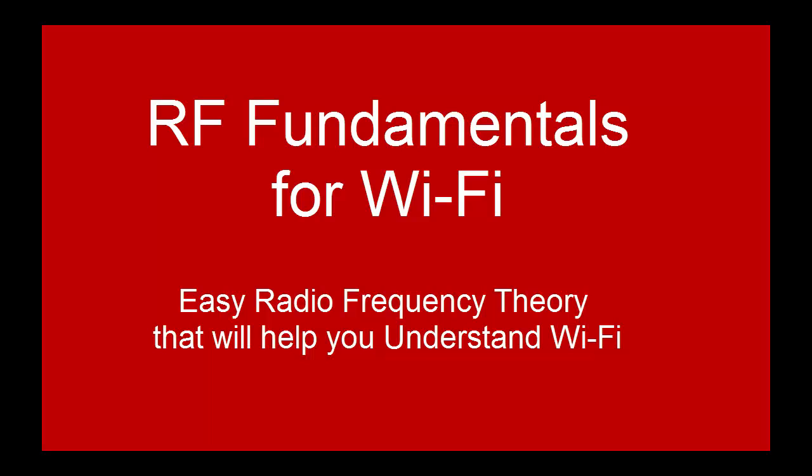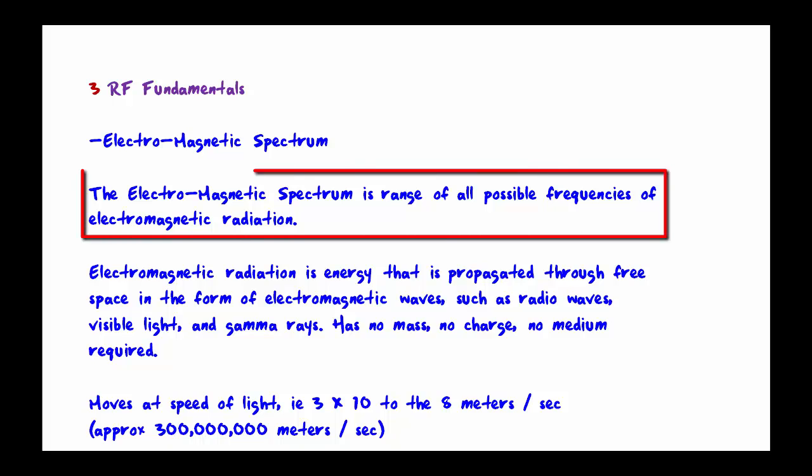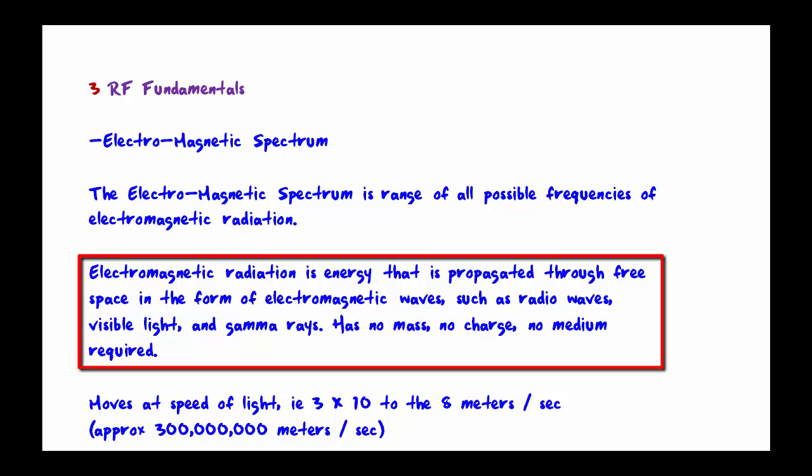RF fundamentals, radio frequency fundamentals. We start by looking at the electromagnetic spectrum. The electromagnetic spectrum is the range of all possible frequencies of electromagnetic radiation. Electromagnetic radiation is energy that is propagated through free space in the form of electromagnetic waves, such as radio waves, visible light, and gamma rays.